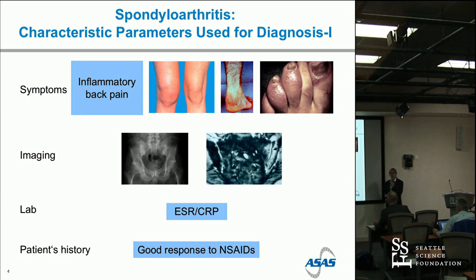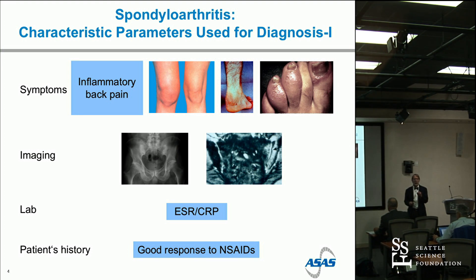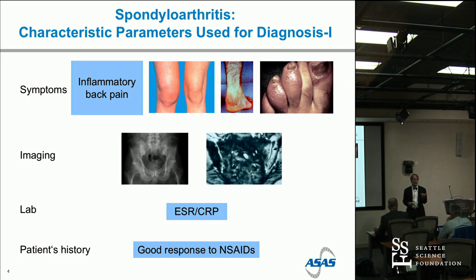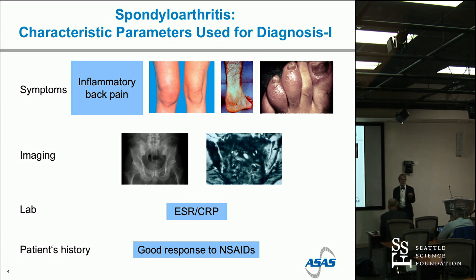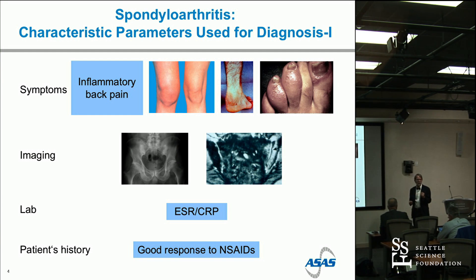These are some of the key features. Inflammatory back pain — I'll come back to a slide which articulates how we define IBP as rheumatologists. Oftentimes asymmetric oligoarticular peripheral disease, often involving larger joints and the lower extremity. Enthesitis is a specific pathological domain unique to spondyloarthritis — wherever a tendon or ligament inserts into bone, there is an accumulation of lymphocytes and neutrophils, driven by cytokines such as IL-23, TNF, or IL-17, and it can be one of the most disabling features. And then dactylitis, which is a swelling of a whole digit. These are pathognomonic features of spondy conditions.